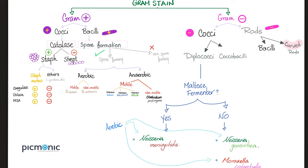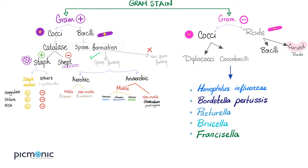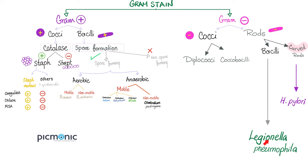Neisseria gonorrhoeae can lead to neonatal conjunctivitis, and so can chlamydia. As for the gram-negative coccobacilli, they include Haemophilus influenzae, Bordetella pertussis, Pasteurella, Brucella, and Francisella — all discussed in previous videos. Gram-negative rods include Legionella and the curved rod H. pylori. We have talked about these before.